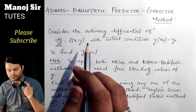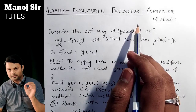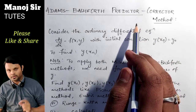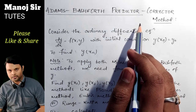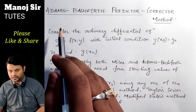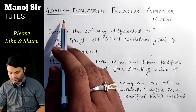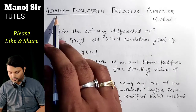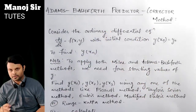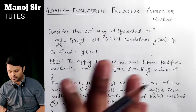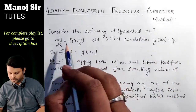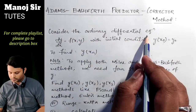In the previous video, that is video number 10, we discussed the first type of predictor-corrector method — Milne's predictor-corrector method — where we discussed the working rule along with a very good question. In this particular video, we are going to see the working rule of the Adams-Bashforth predictor-corrector method, along with a good example problem.